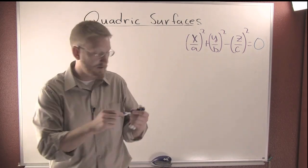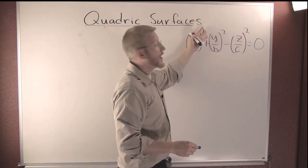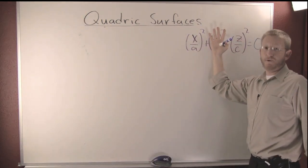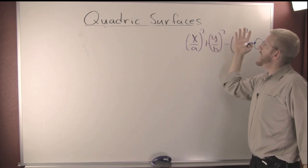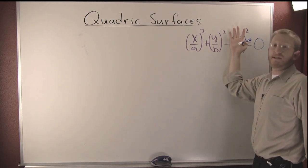Let's take a look at this. Our yz trace is a hyperbola, our xz trace is a hyperbola, our yx trace is an ellipse.